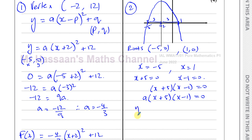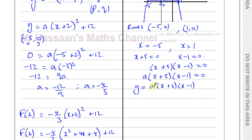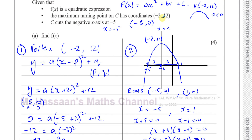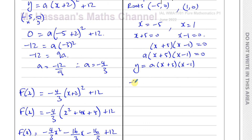We want to find what A is. We know the curve passes through the point negative 2, 12. I can't use the root points since they'd cancel A out, but I can use this point. Substituting x equals negative 2 and y equals 12: 12 equals A times negative 2 plus 5 times negative 2 minus 1, which is A times 3 times negative 3. So 12 equals negative 9A, therefore A equals negative 4 over 3 — exactly what we got before.